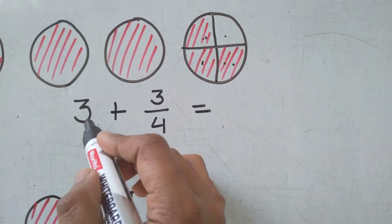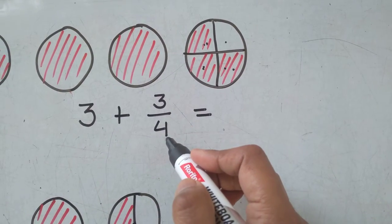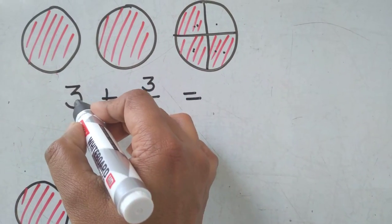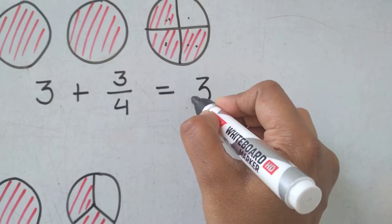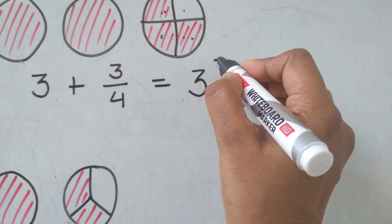Can be written as... write this three whole number here, then three-fourths.